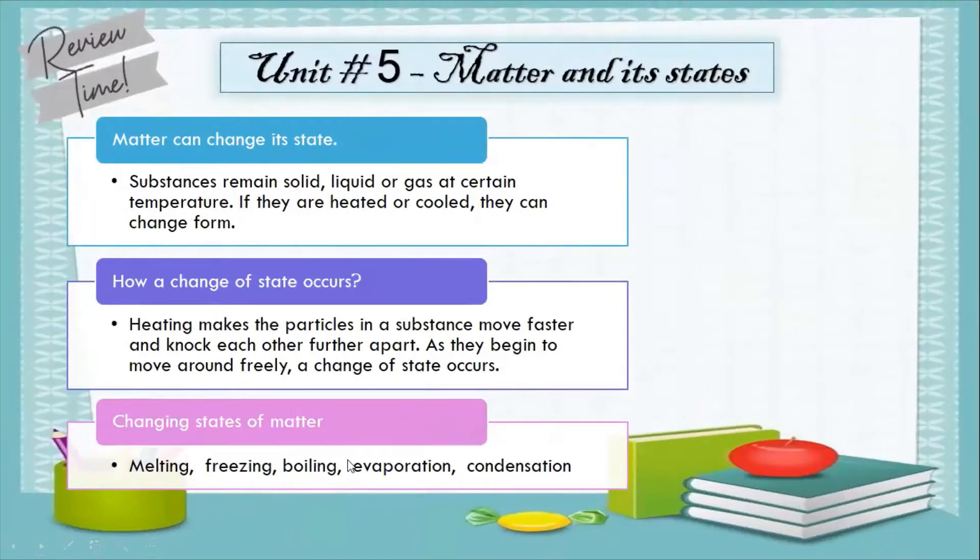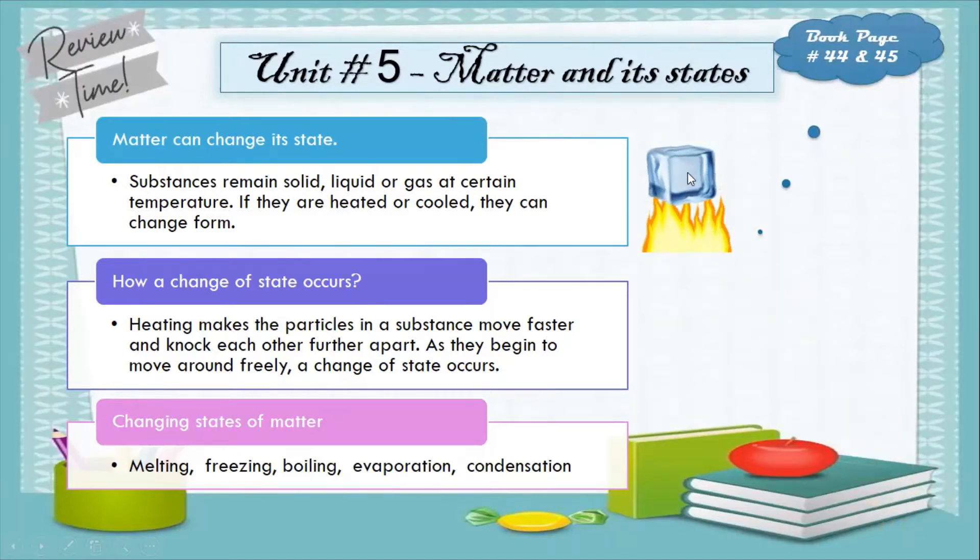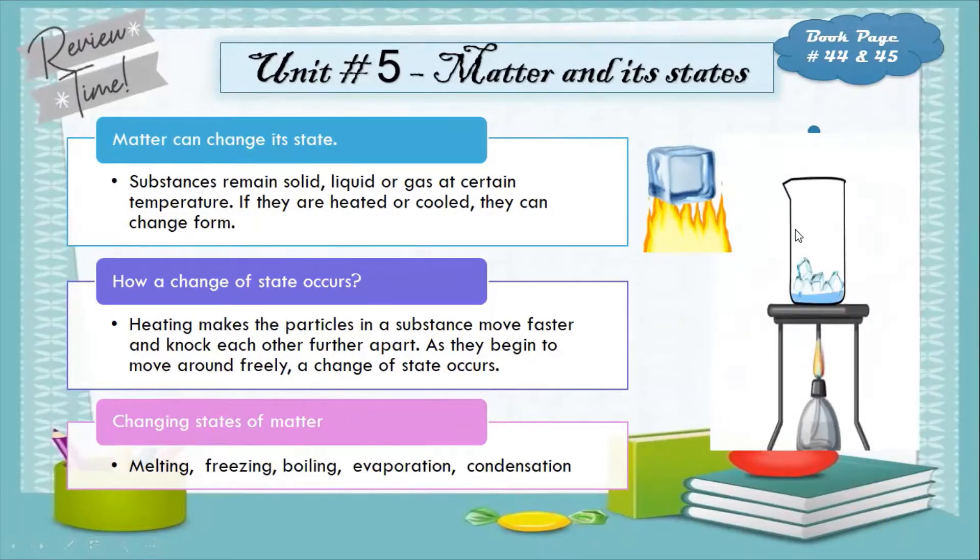Matter can change its state, students. Substances remain solid, liquid or gas at a certain temperature. If they are heated or cooled, they can change form. For example, when ice, a solid, is heated it changes to water, a liquid. When water is heated it changes to water vapor, a gas. How a change of state occurs. Heating makes the particles in a substance move faster and knock each other farther apart. As they begin to move around freely, a change of state occurs. For example, when solid such as ice is heated, its particles begin to move faster. Eventually they move so fast that they move away from each other. As they begin to move around more freely, the ice melts. It changes to liquid water and no longer has a fixed shape.